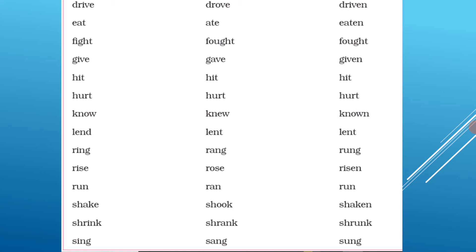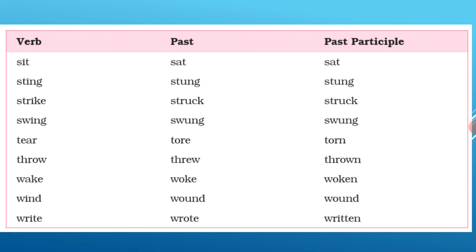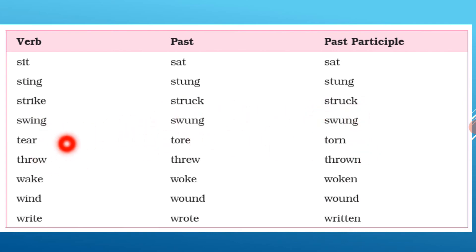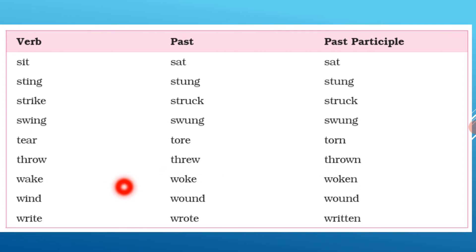So there are so many of these verbs — you have to learn them. Because the more you practice, the more you will learn. These verbs include: 'sit', 'sat', 'sat'; 'sting', 'stung', 'stung'; 'strike', 'struck', 'struck'; 'swing', 'swung', 'swung'; 'tear', 'tore', 'torn'; 'throw', 'threw', 'thrown'; 'wake', 'woke', 'woken'; 'wind', 'wound', 'wound'.